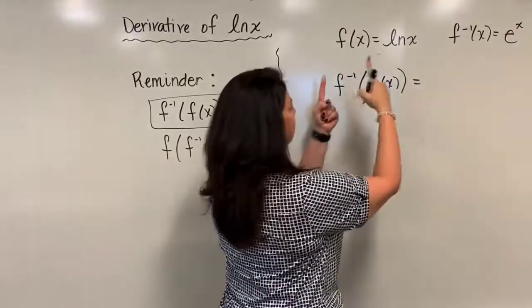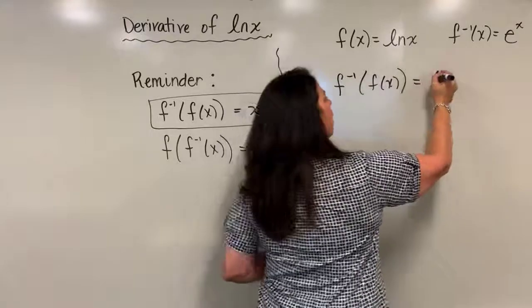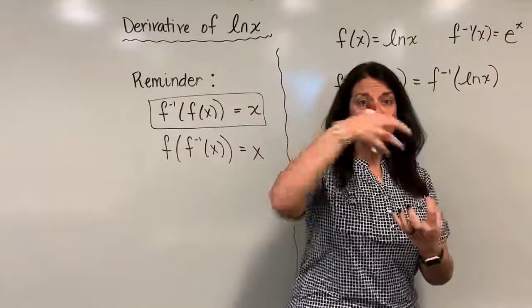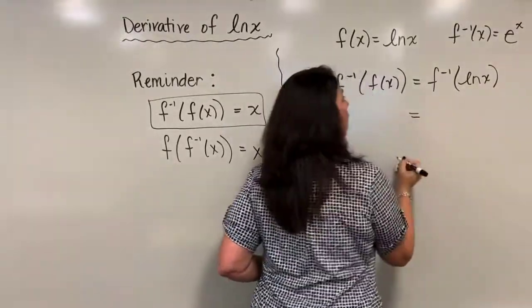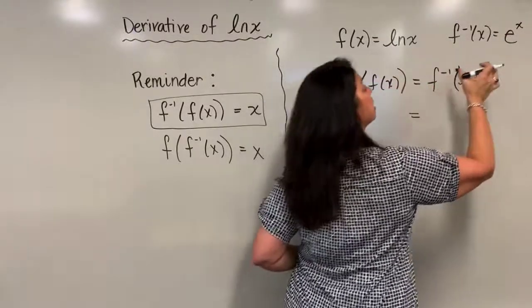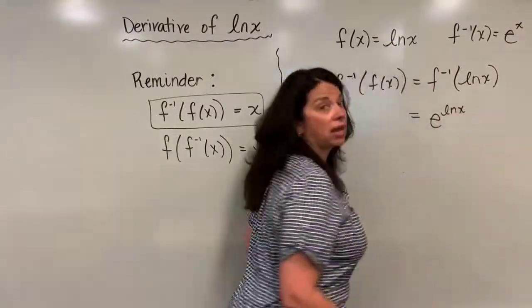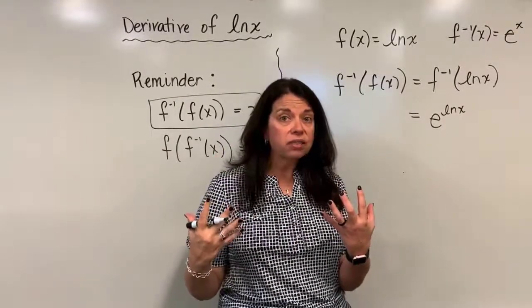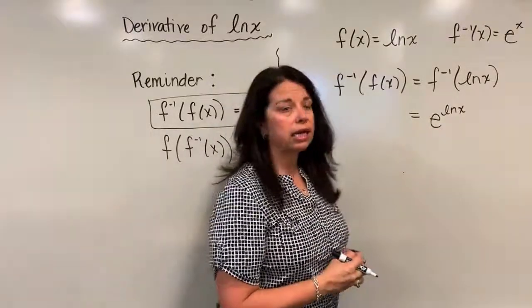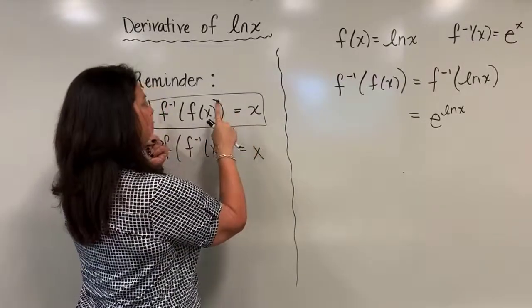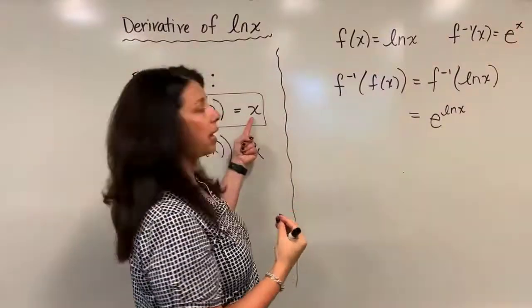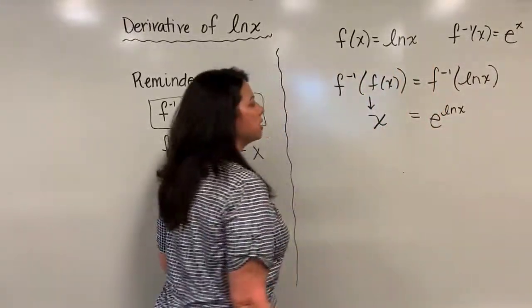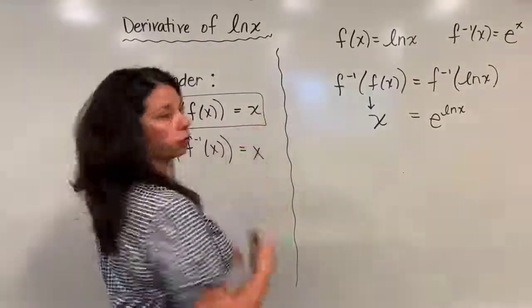I have f-inverse of the inside function natural log x, which means I take natural log x and put it inside e to the x. So I now have e to the natural logarithm of x. That looks unusual, but that's exactly what happens when we embed one function into the other. Since composing an inverse with its function returns x, we can simplify the left side to just x. So now I have the equation: x equals e to the natural log x.